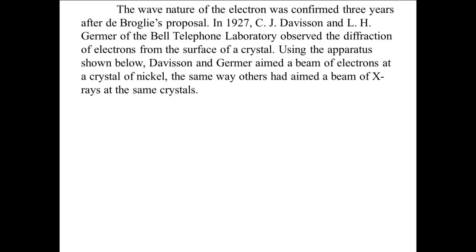In 1927 at Bell Telephone Laboratory, Davison and Germer observed interference patterns when a beam of electrons was aimed at a crystal of nickel metal. This was a setup similar to ones that had been used to observe interference when x-rays were aimed at the same crystal.